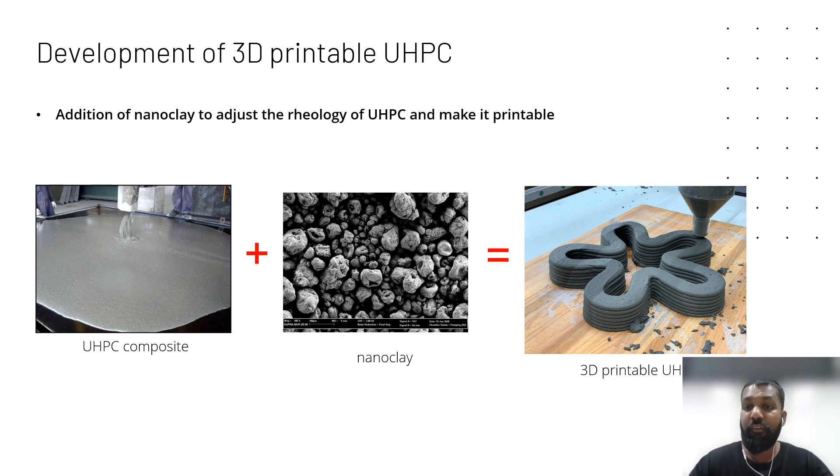Nanoclay basically provides a platform for cement and sand particles to flocculate together so the viscosity can be increased. Now we have two admixtures: a superplasticizer which makes UHPC flowable and nanoclay which reduces the flow. We needed to find a balance between these two admixtures to make UHPC printable without losing its high mechanical properties.